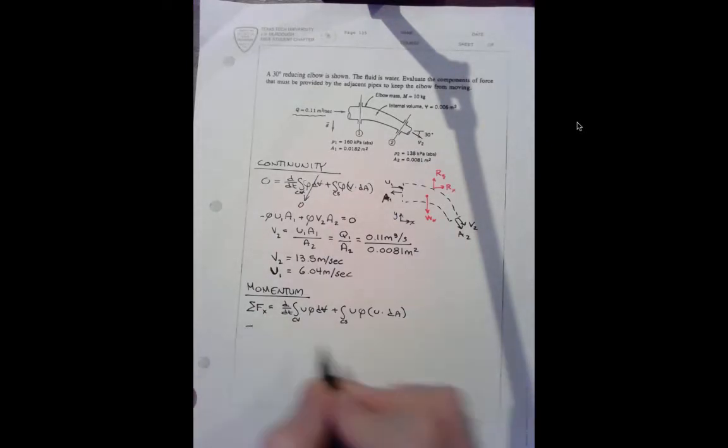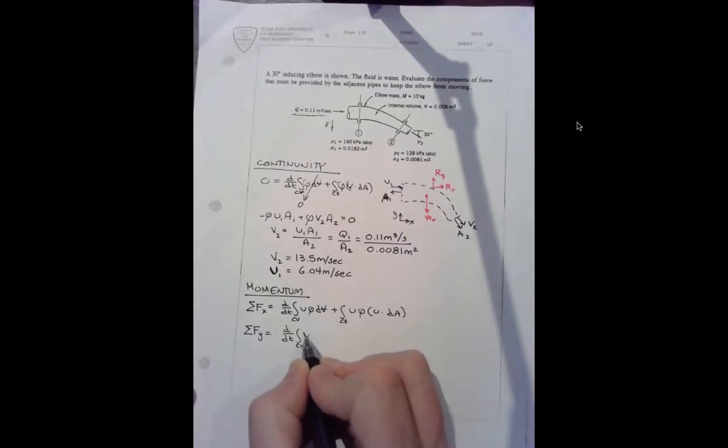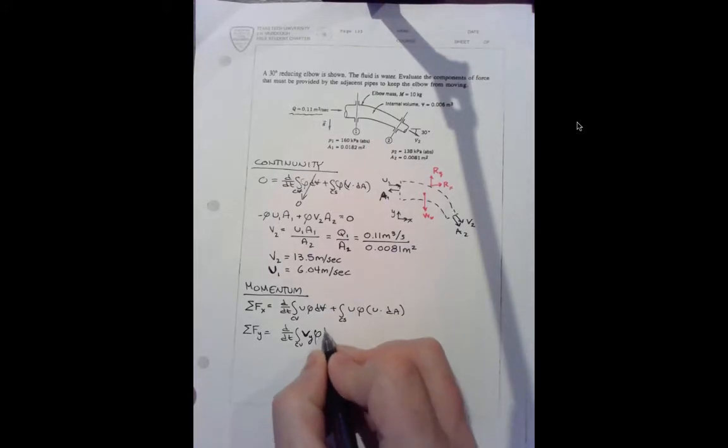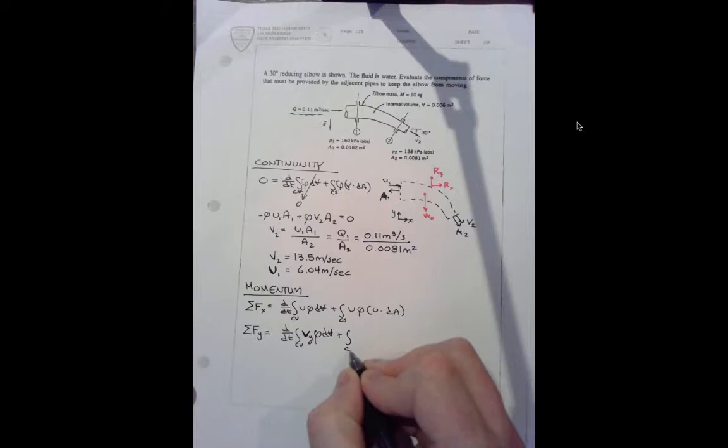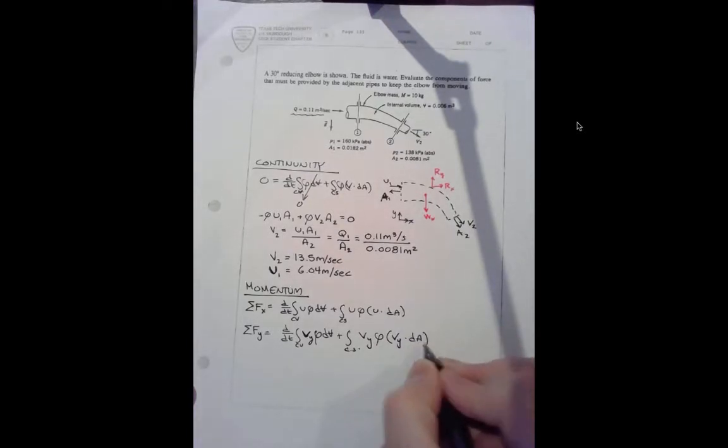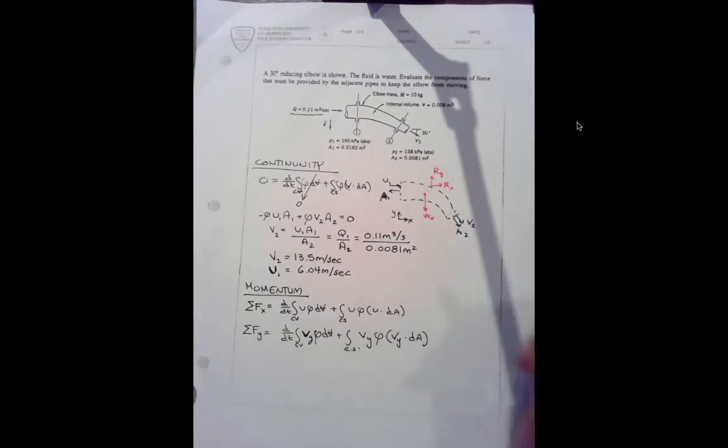So the sum of the forces in the y direction is d by dt control volume of v, at least the y component of it, rho d volume plus the integral over the control surface, the y component of v rho v dot dA. Bear in mind that that's what we're calling v2. Because of that 30 degree angle it has an x and a y component to it.